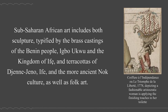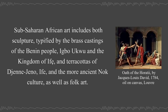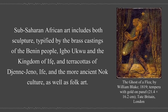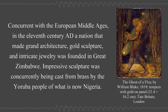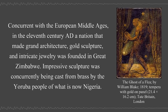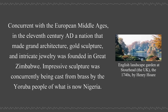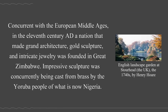Sub-Saharan African art includes both sculpture typified by the brass castings of the Benin people, Igbo-Ukwu and the Kingdom of Ife, and terracottas of Djenné-Djenno and the more ancient Nok culture, as well as folk art. Concurrent with the European Middle Ages, in the 11th century AD, a nation that made grand architecture, gold sculpture, and intricate jewelry was founded in Great Zimbabwe. Impressive sculpture was also being cast from brass by the Yoruba people of what is now Nigeria.